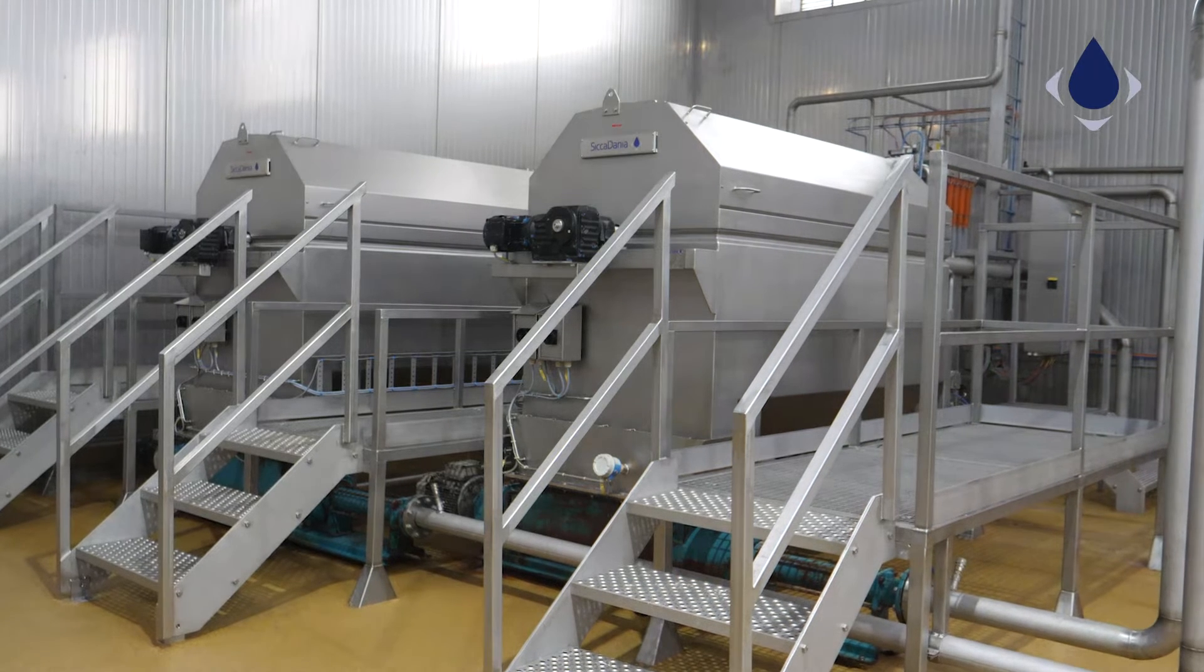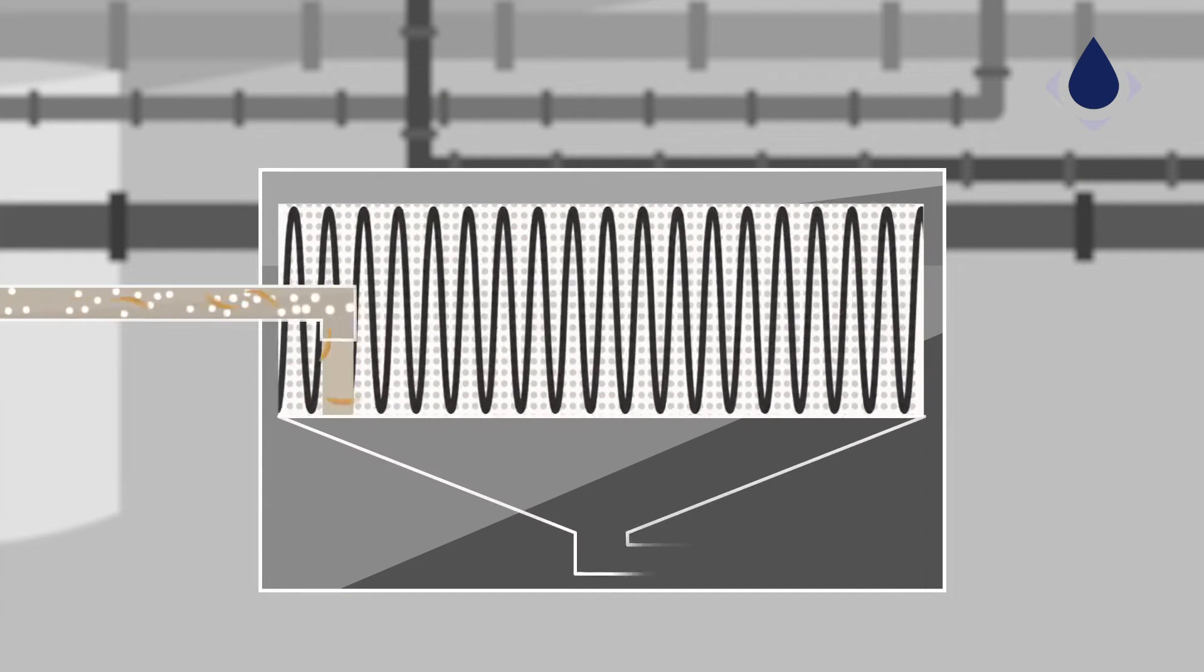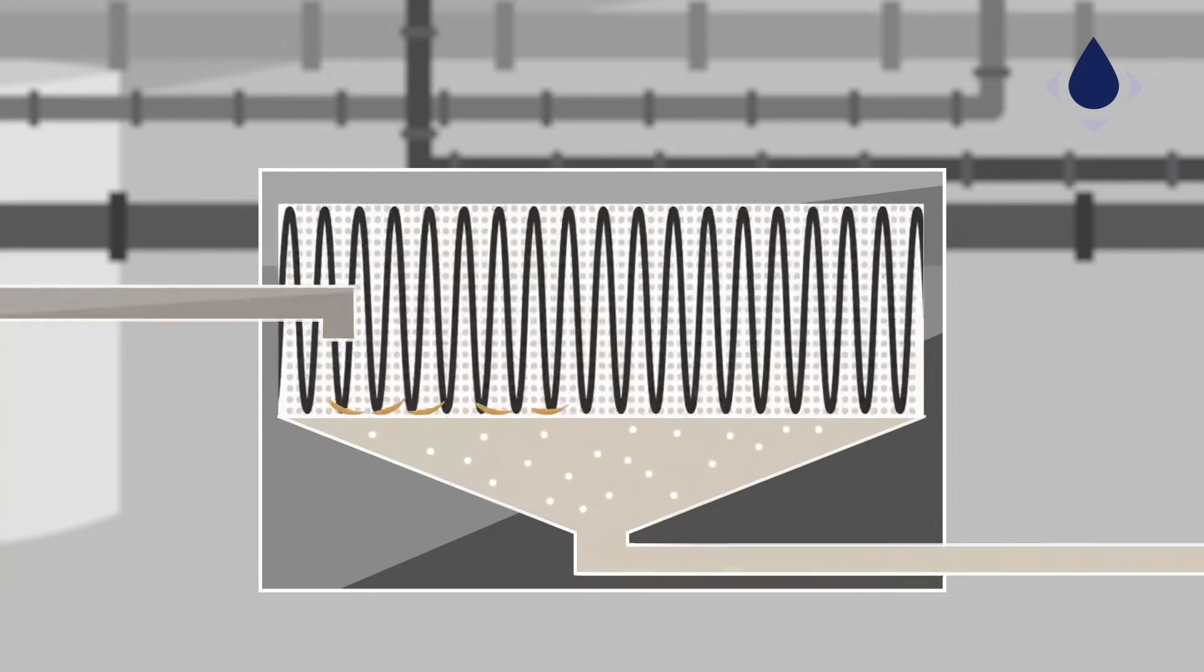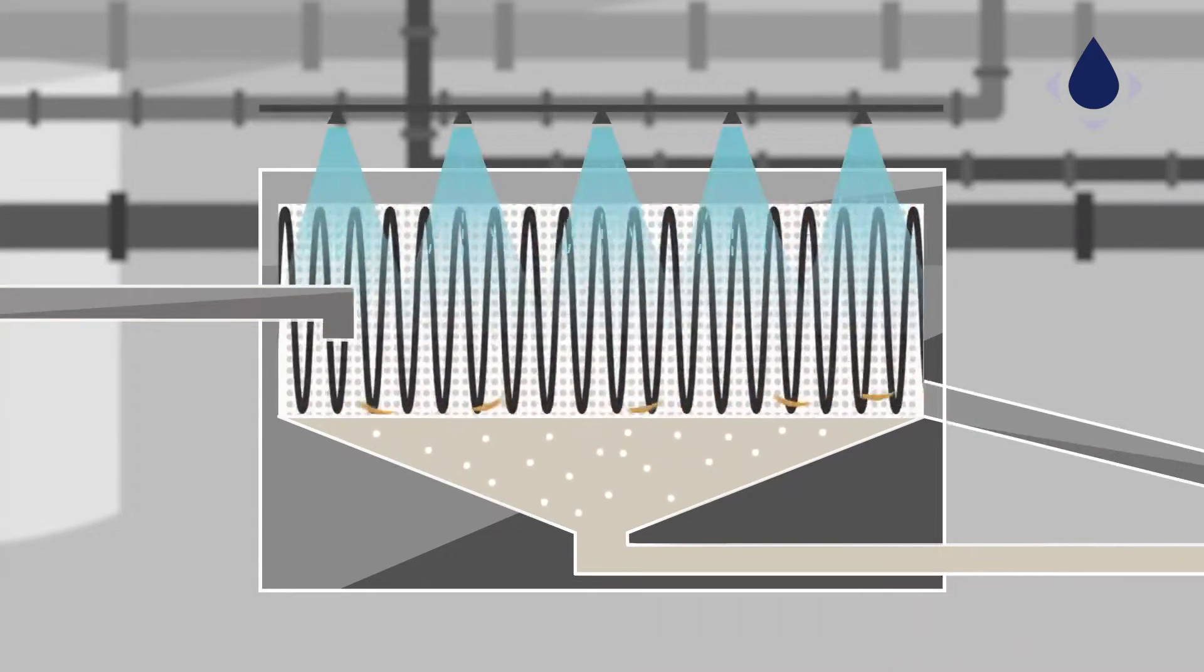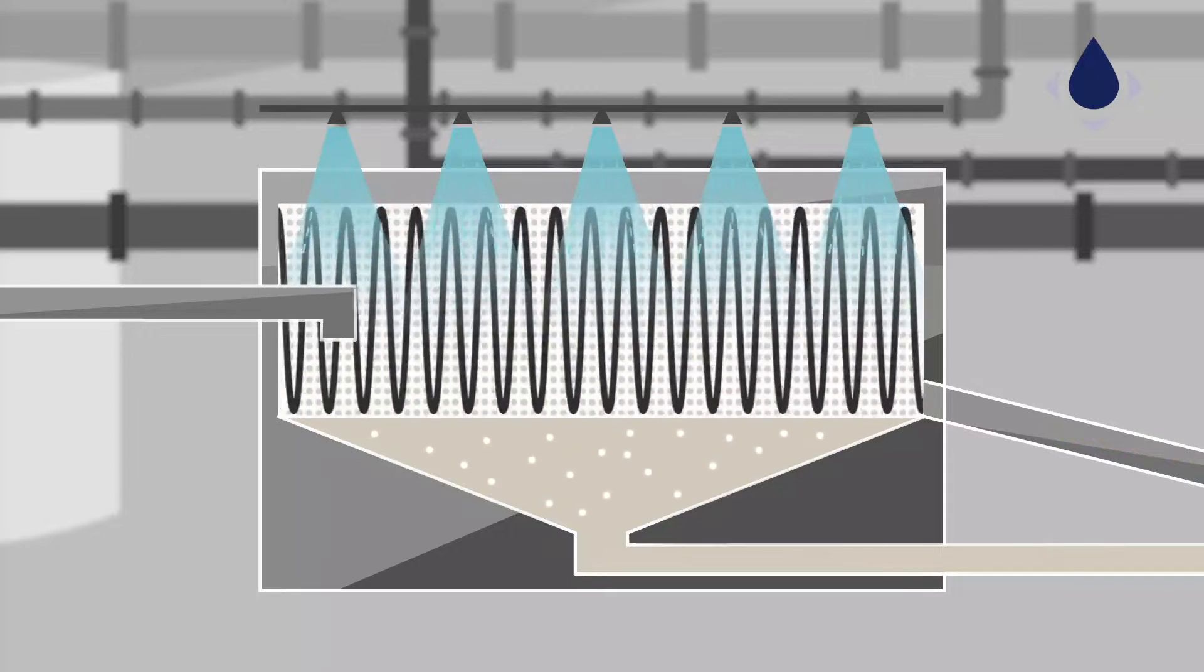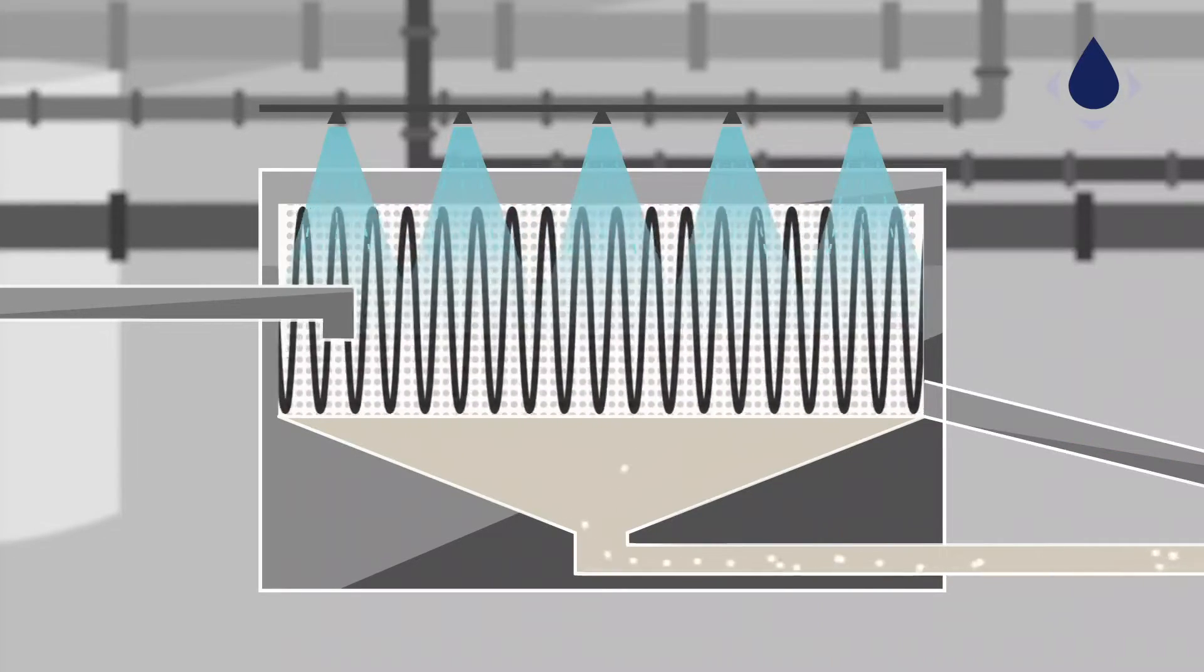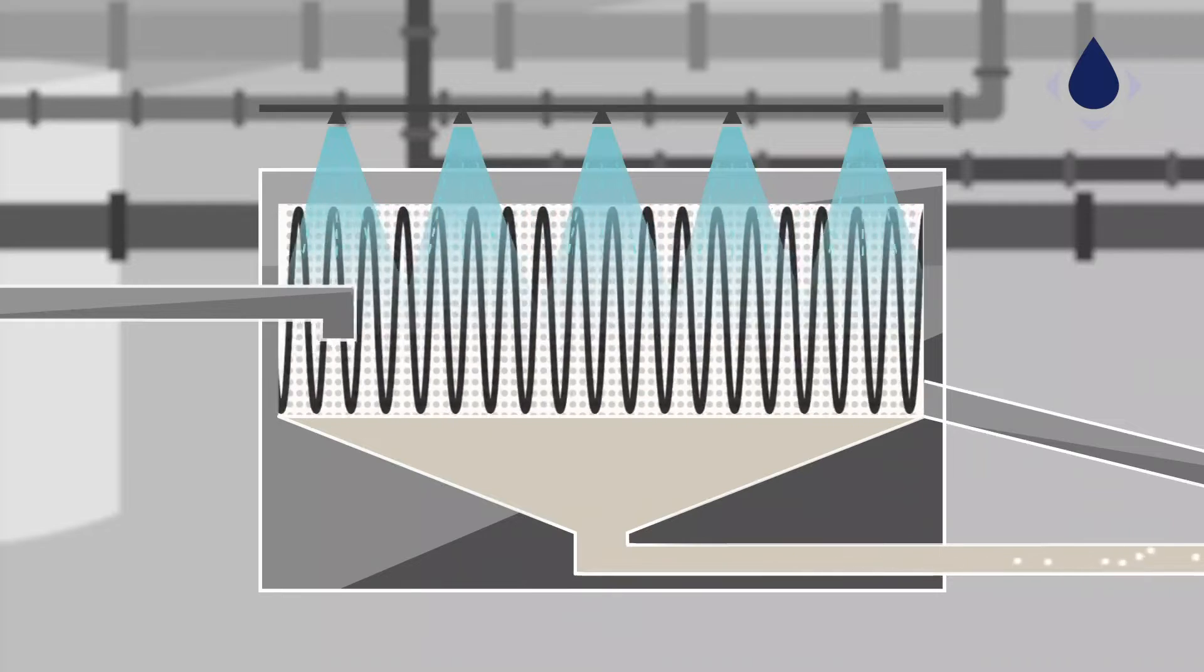The processed water with starch and fines enter the sieve drum, while the solids are pushed along to the far end of the drum with the aid of a ribbon screw. Finally, the solids leave the refining sieve to be further processed or discharged. The processed water leaves the drum through the sieve lining and is collected in the buffer tank underneath.